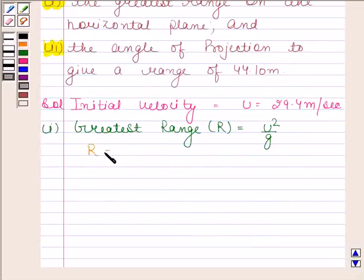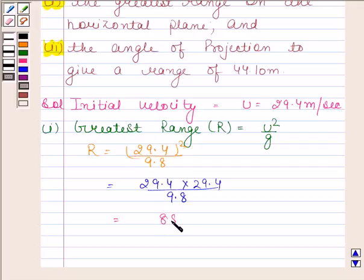Here u equals 29.4 meters per second, so we have 29.4 squared divided by g which is 9.8. This equals 29.4 times 29.4 divided by 9.8. On simplifying, we get 88.2 meters as the greatest range on the horizontal plane.